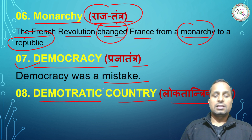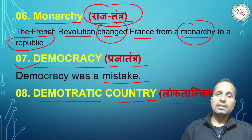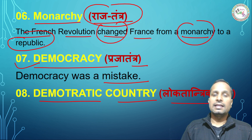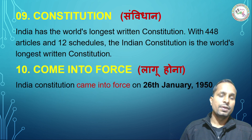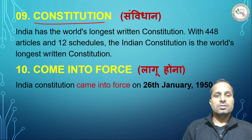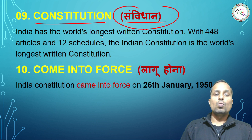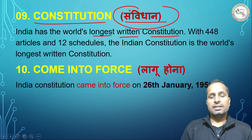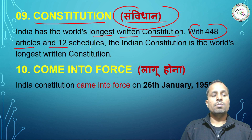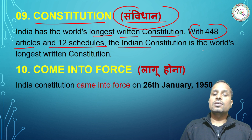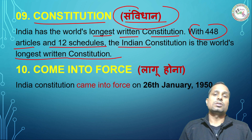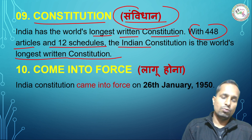'Democratic country' — लोकतांत्रिक। India is a democratic country. The Constitution of India states: 'India, that is Bharat' — ये दो official names हैं। Constitution का मतलब है संविधान, जो supreme law of the land है। India has the world's longest written constitution, with 448 articles and 12 schedules.